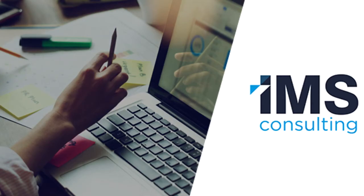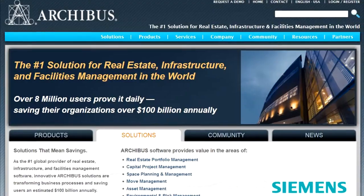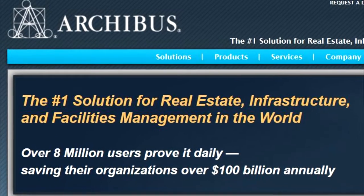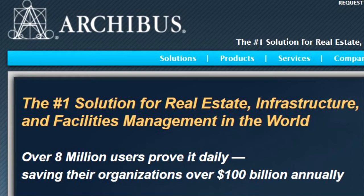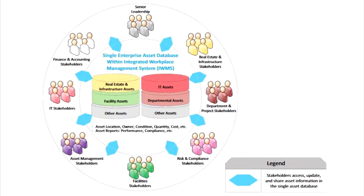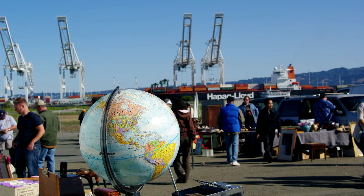Hi, we're IMS Consulting and we make complicated facilities and real estate easy with the help of Archibus IWMS, the number one developer worldwide of real estate infrastructure and facilities management software. Facilities and physical infrastructure management is a critical business function, comprising 25 to 50% of a company's fixed assets and operating costs. Facilities and infrastructure are significant resources that must be efficiently managed in order for a business to succeed in a globally competitive market.